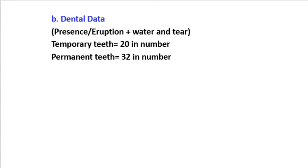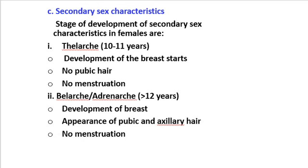Presence and eruption of teeth can help in age estimation, and also the wear and tear of the teeth helps in determination. Temporary teeth are 20 in number while permanent teeth are 32 in number. Secondary sex characteristics — stage of development of secondary sex characteristics in females.